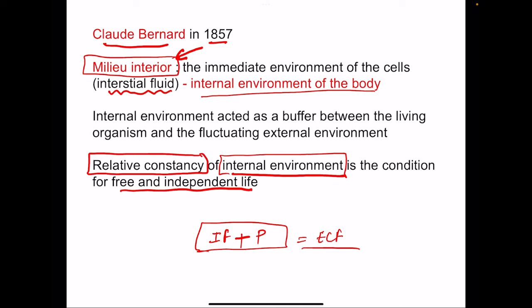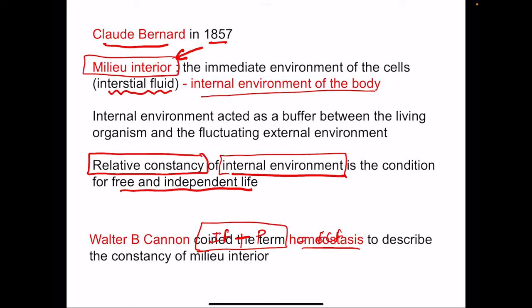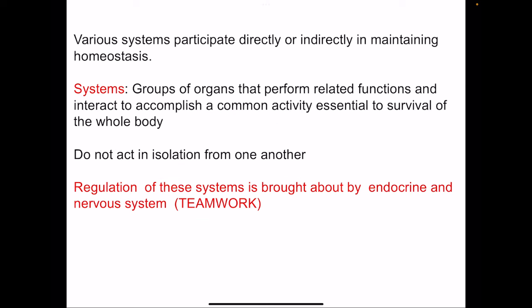Various organ systems ramp up their actions to meet the requirements of a particular state, maintaining constancy of the internal environment even during disturbances. It was Walter B. Cannon who coined the term homeostasis to describe the constancy of milieu interior. Two important terms: milieu interior coined by Claude Bernard, and homeostasis coined by Walter B. Cannon. Various systems participate directly or indirectly in maintaining homeostasis. A system is a group of organs that perform related functions.